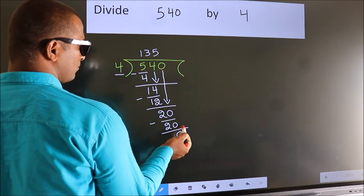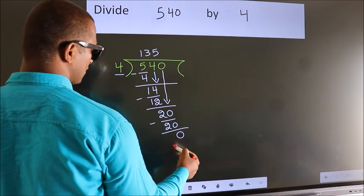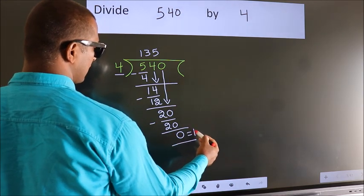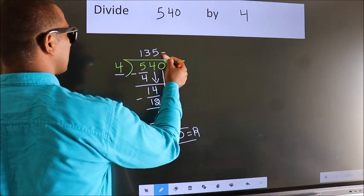No more numbers to bring it down. So we stop here. This is our remainder. This is our quotient.